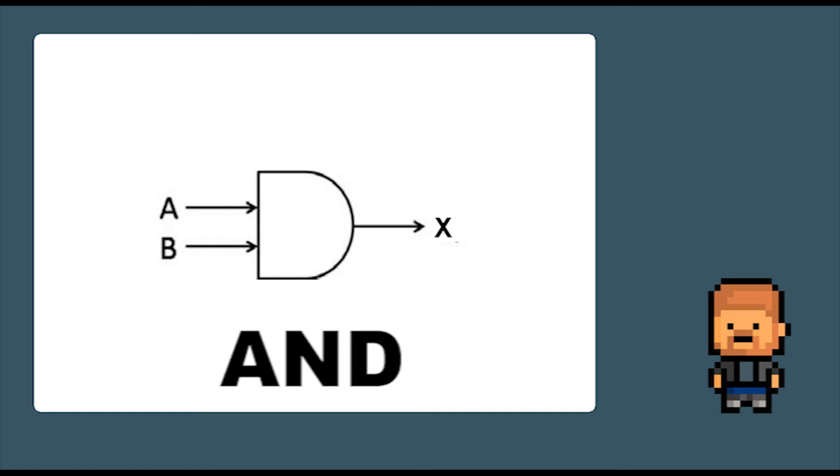The next gate is the AND gate, and it has two inputs and one output. It requires both inputs to be ones for the output to be one. So if A and B are ones, X will also be a one. If A is one and B is zero, X will be zero. The best way to remember an AND gate is that A needs to be equal to one and B also needs to be equal to one for X to equal one.